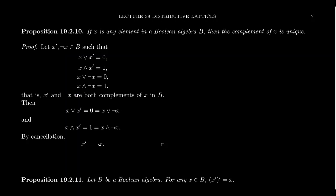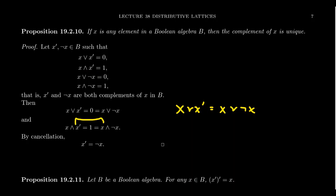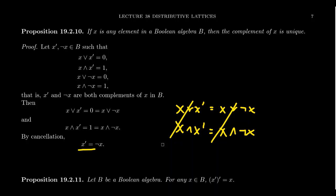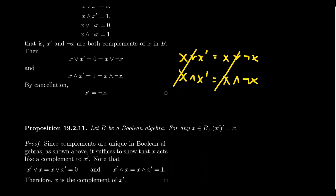By assumption, x join x-prime equals zero and x join not-x equals zero, so x join x-prime equals x join not-x. Also x meet x-prime equals one and x meet not-x equals one, so x meet x-prime equals x meet not-x. By the third cancellation law we can cancel the x's, giving x-prime equals not-x. So two different complements for the same element must actually be equal — complements are unique.